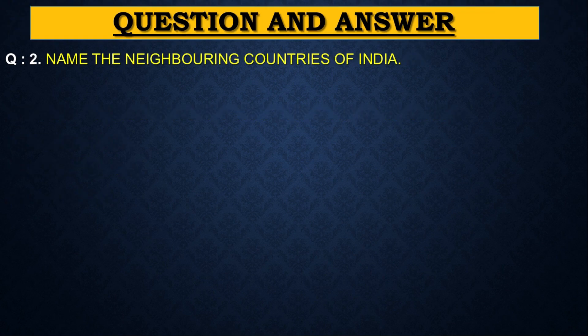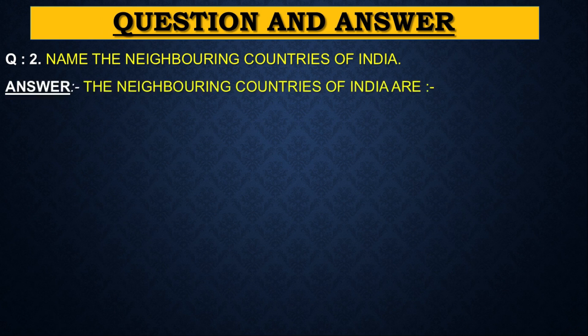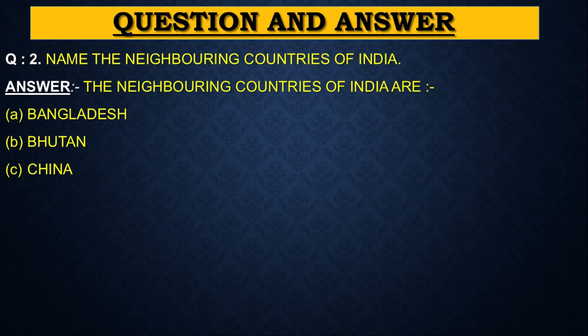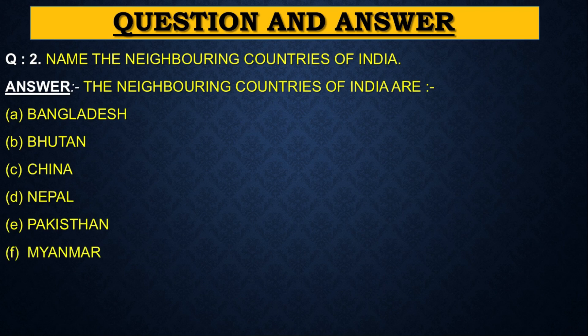Next question: Name the neighboring countries of India. Answer: The neighboring countries of India are: first, Bangladesh; second, Bhutan; third, China; fourth, Nepal; fifth, Pakistan; sixth, Myanmar; seventh, Sri Lanka.